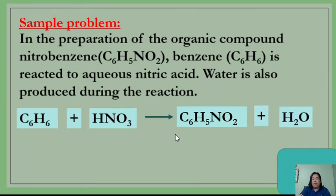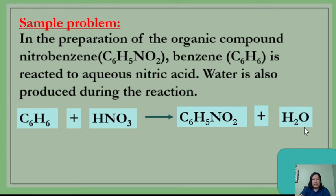For every chemical equation, you need to check if it is balanced. In this particular reaction, carbon is 6 on the reactant side and also 6 on the product side. Hydrogen is 6 plus 1, which is 7 in the reactant; in the product, hydrogen has 5 plus 2, also 7. Nitrogen is 1 on both sides. Oxygen in the reactant side is 3, and on the product side is 2 plus 1, which is 3. So the equation is already balanced.